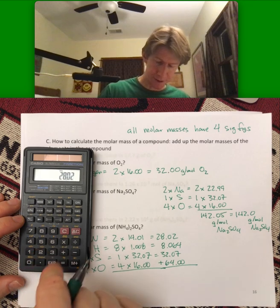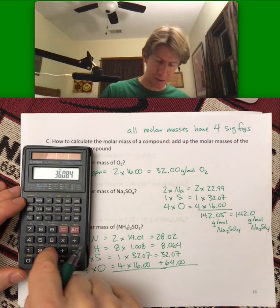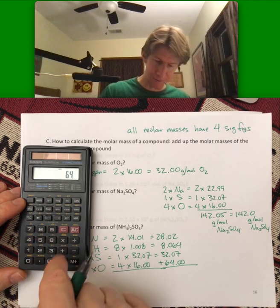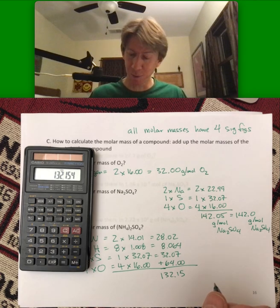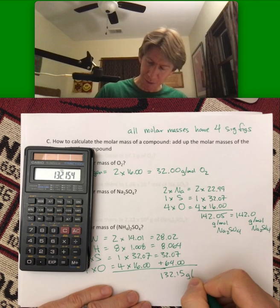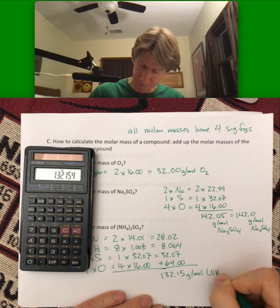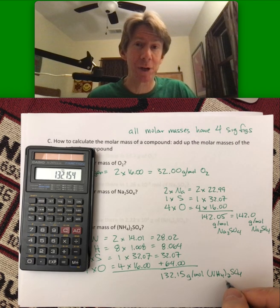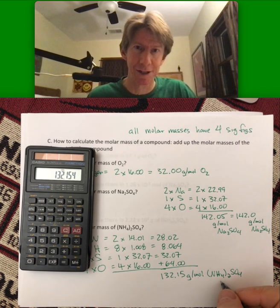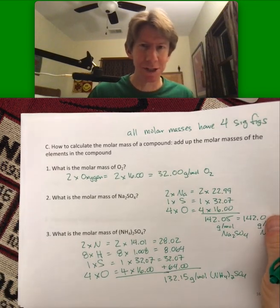28.02 plus 8.064 plus, is that good? 32.07 plus 64. I get 132.154. We shouldn't go to any more than two decimal places. Grams per mole. 132.2 would also be fine. And then you should write the formula. Because grams per mole is part of your units. What it is the grams per mole of is the other part of your units. So, now our units have two parts to them. Neither of which you can put in the learning management system.